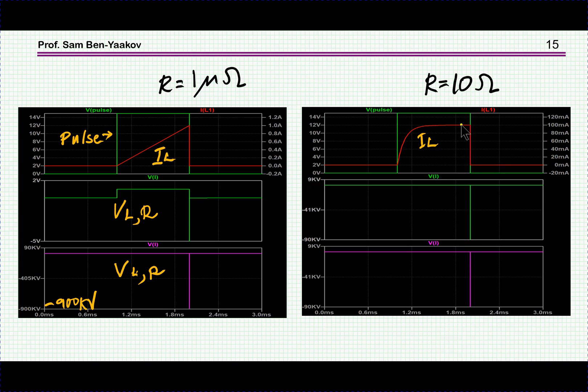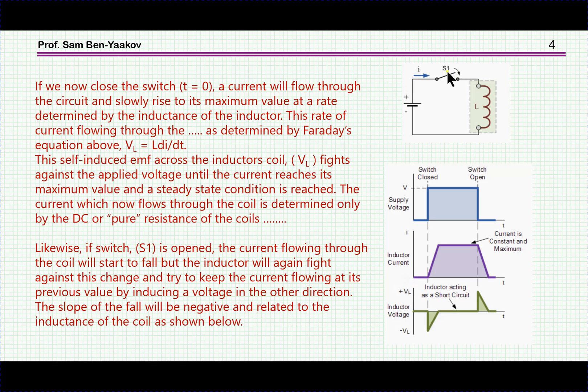And then again, when you open the switch, disconnect the current, interrupt it, you get this negative spike again which will cause the current in the inductor to go very quickly to zero. So this is very well known. There's nothing new about it, except for what is explained in this tutorial, which we understand is nonsense, wrong, and shows a lack of understanding of very basic principles in electrical engineering.